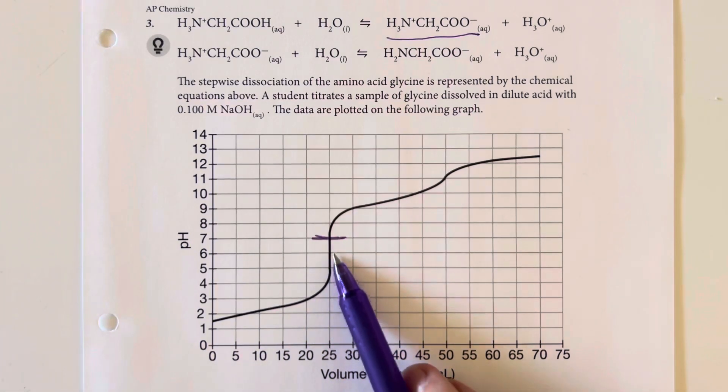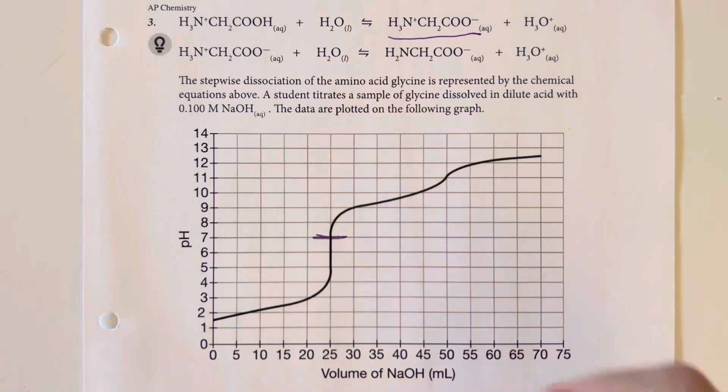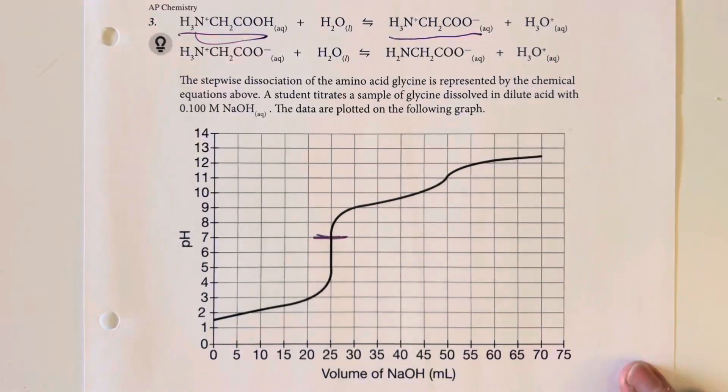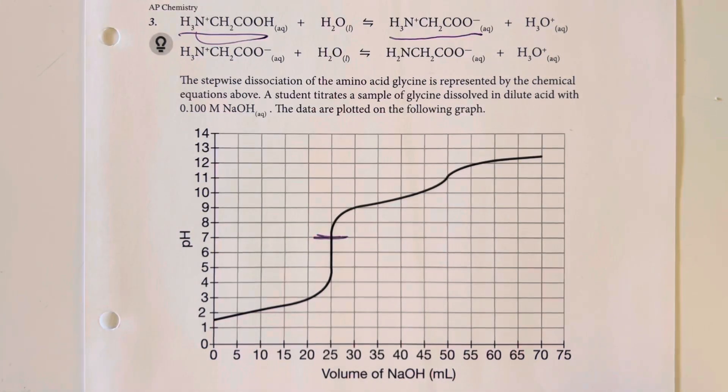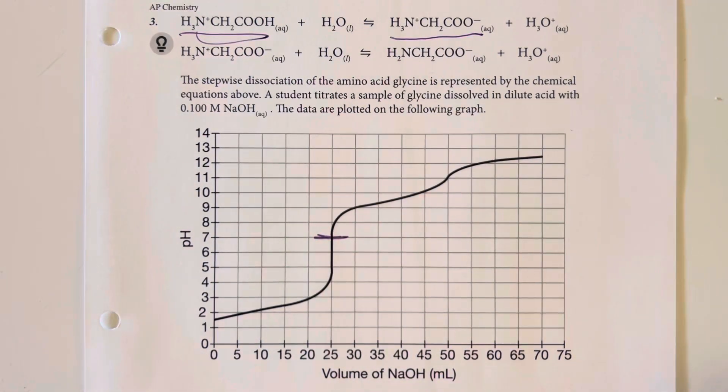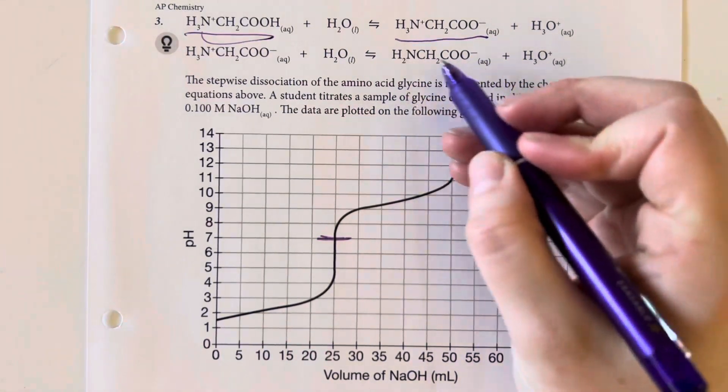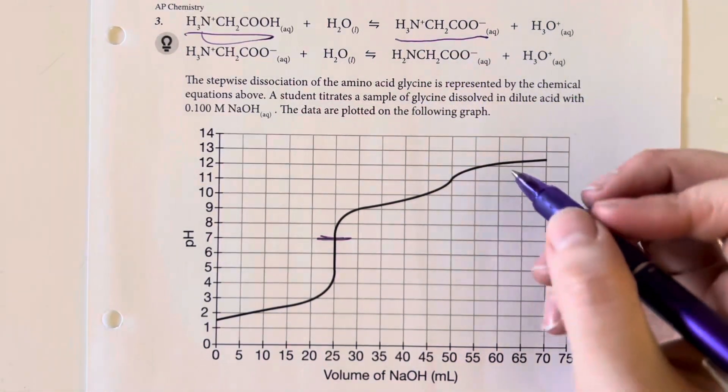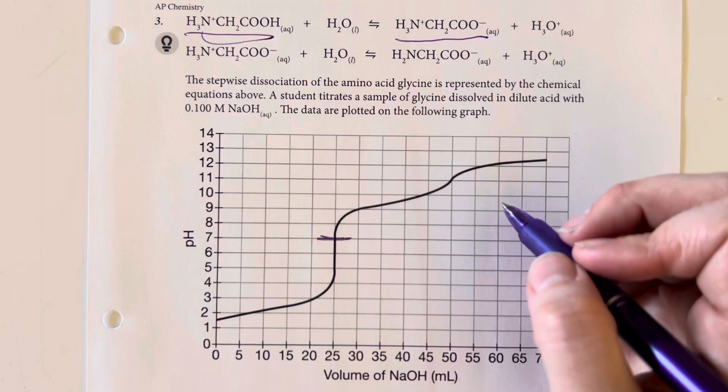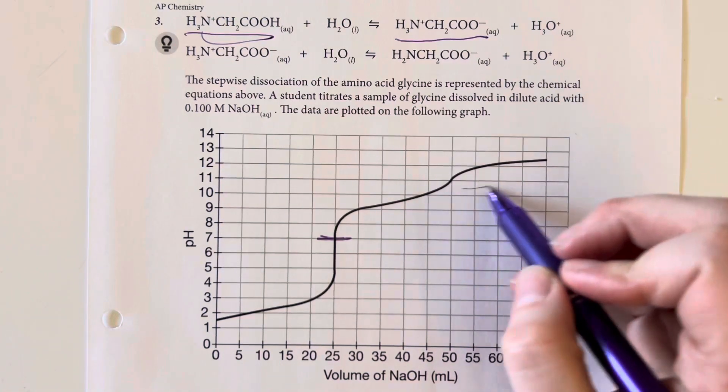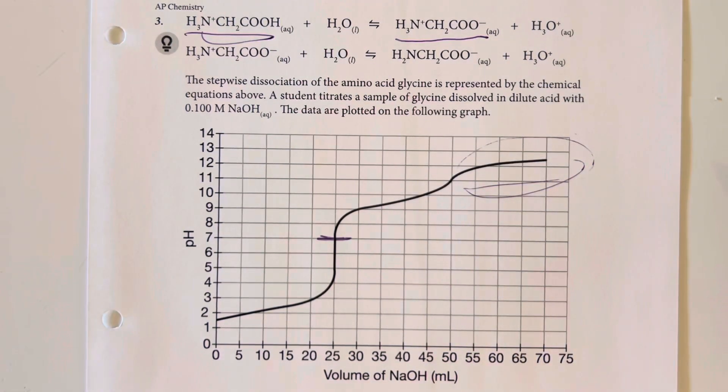So we have glycine increasing, increasing, increasing. We definitely do not have a lot of our initial glycine remaining, and we don't have any of our final product. That's going to be what's going to be the main factor up here, and that's going to be option choice C.